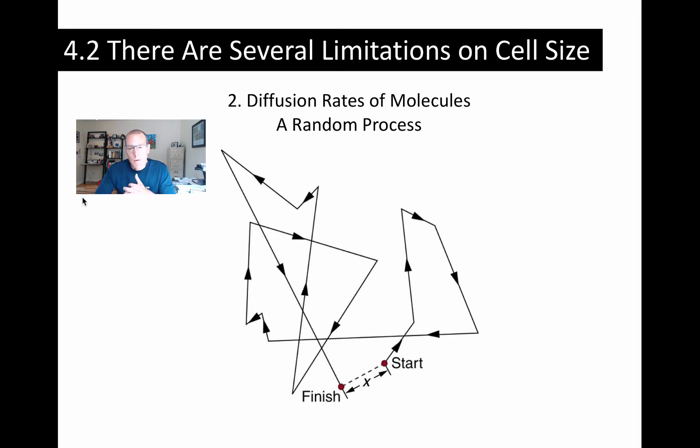So the first thing to think about diffusion is that diffusion is completely random. It is determined by the initial starting velocity and direction of a molecule, but then the size of the molecule, the temperature of the system, and the concentration of other things that the solute that's diffusing can collide with.